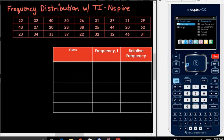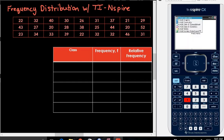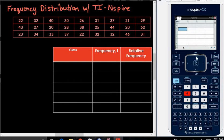I am going to start with a new document. I'm going to add a lists and spreadsheet. What you would do is you would take and name your data set. You want to name your variable something so that you have it. I'm just going to call it data.